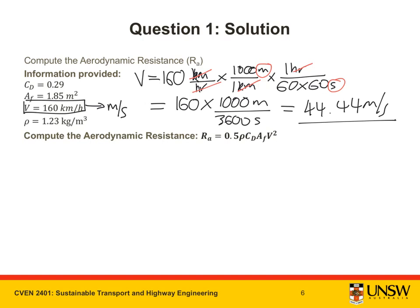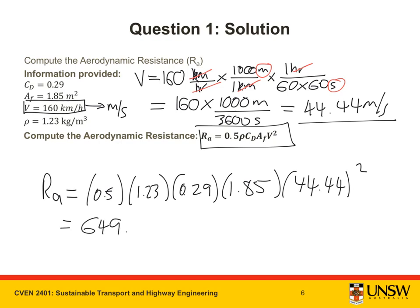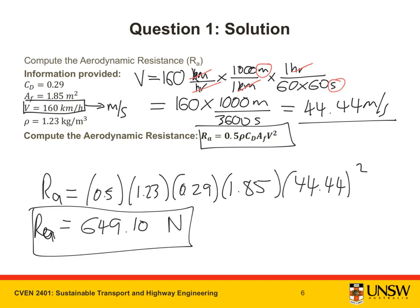Now we can plug all the values into the RA equation: RA = 0.5 × 1.23 × 0.29 × 1.85 × (44.44)². Putting this into the calculator gives 649.10 N. RA is a force, so it is in Newtons.